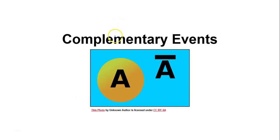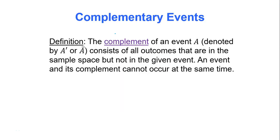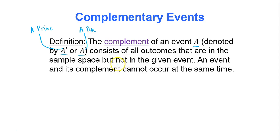In this video we will talk about complementary events — basically events that are opposites of one another. The complement of an event A is denoted by A prime or A bar. It consists of all outcomes that are in the sample space but are not in the given event A. An event and its complement cannot occur at the same time — that's the golden rule.